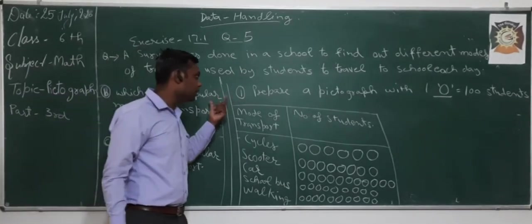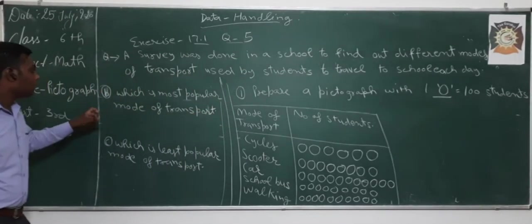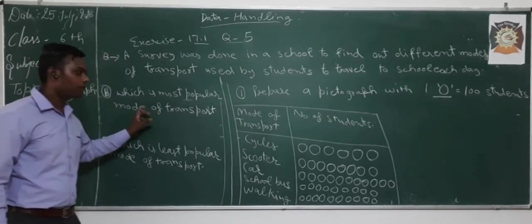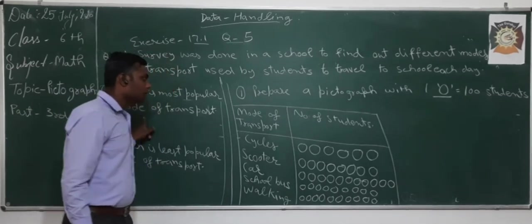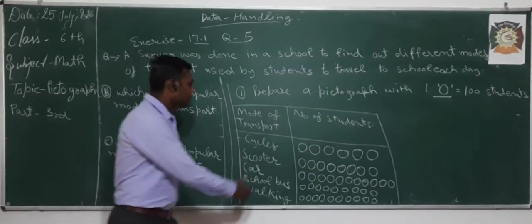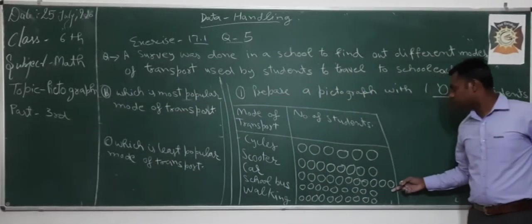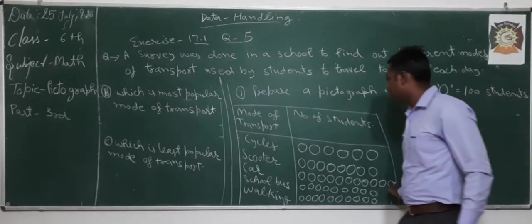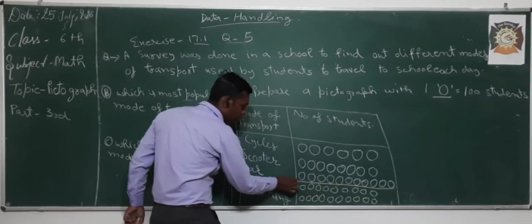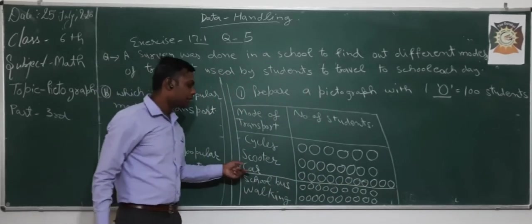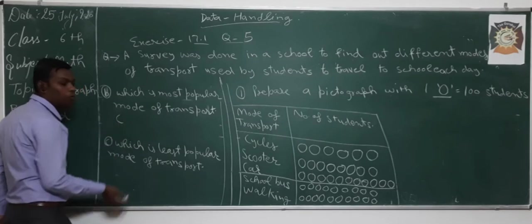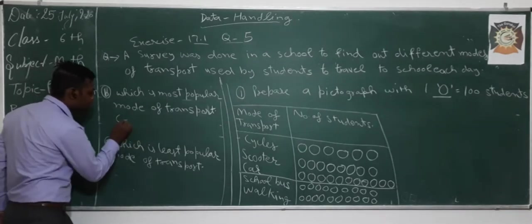On the same question there are two more parts — Part B and Part C. Part B asks: which is the most popular mode of transport? From the pictograph, we check which has more circles. We can see that car has 11 circles, so the most popular mode of transport is car.